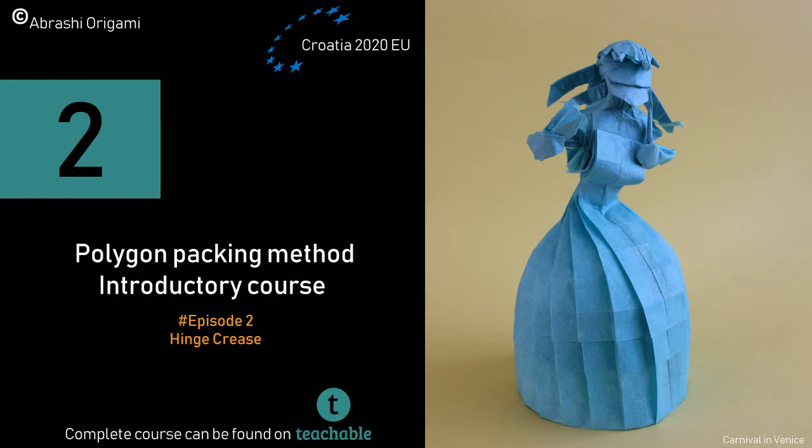Hi! After the introductory episode, today we're finally going to start talking about polygon packing method itself. We will examine basic elements first. Specifically, we will talk about three basic creases that represent the foundation of all origami models, regardless of which method we use. They are hinge, ridge, and axial creases. In this episode we'll talk about the first one, a hinge crease.